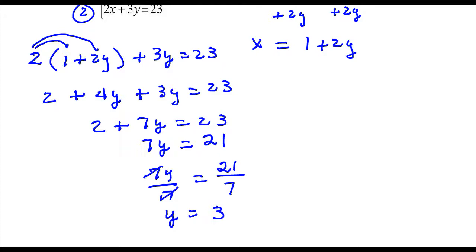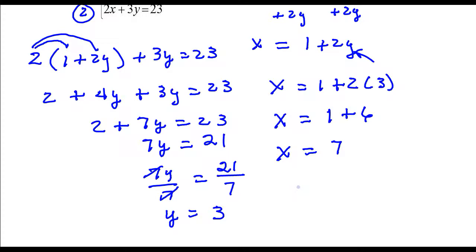Now to find x, I just need to substitute y is equal to 3 in for this y. So x is 1 plus 2 times 3, x is 7. So the solution to this system of equations is x is 7, y is 3.